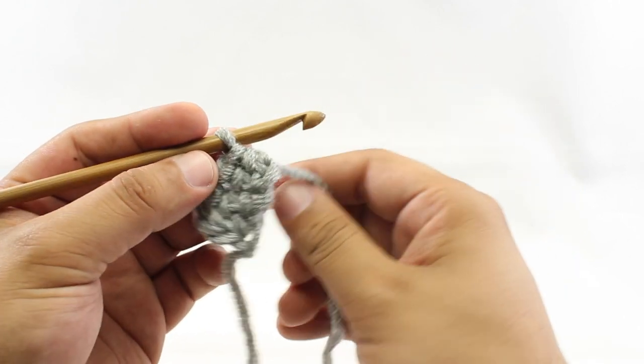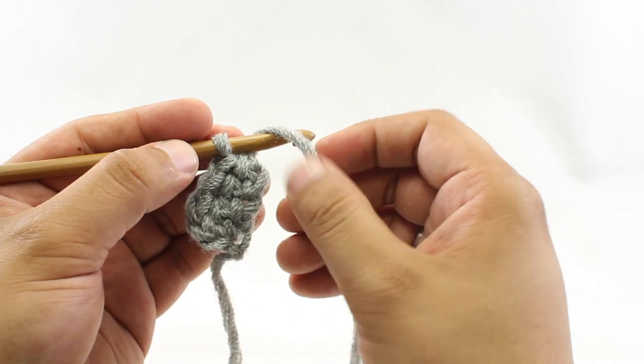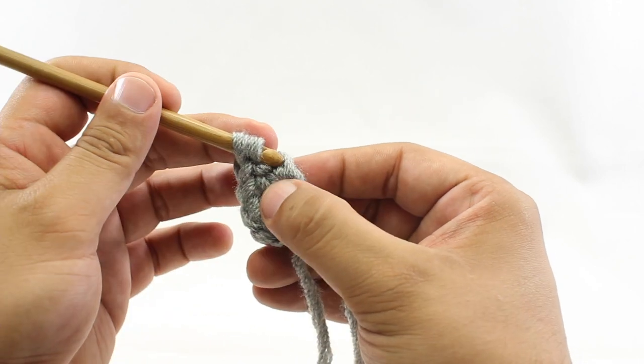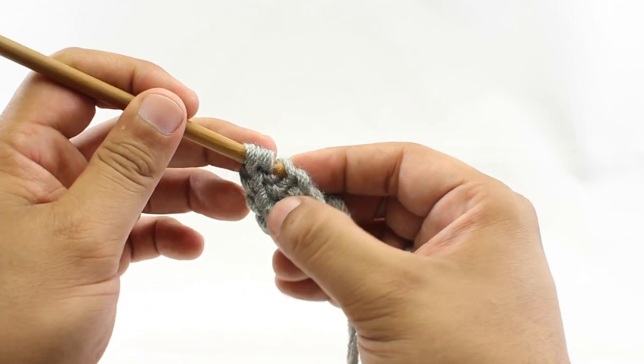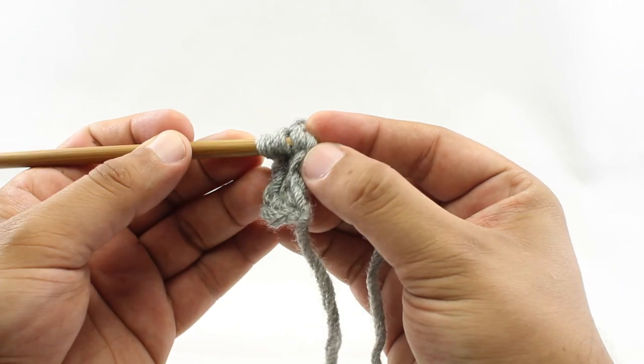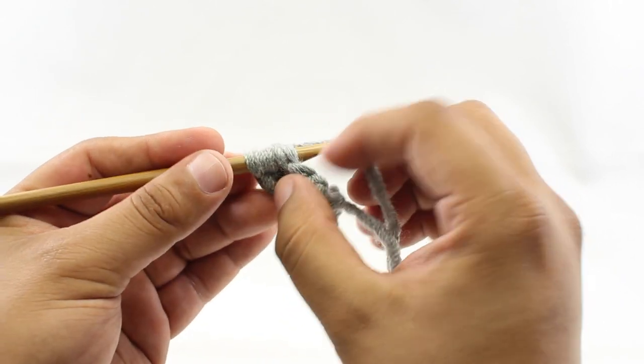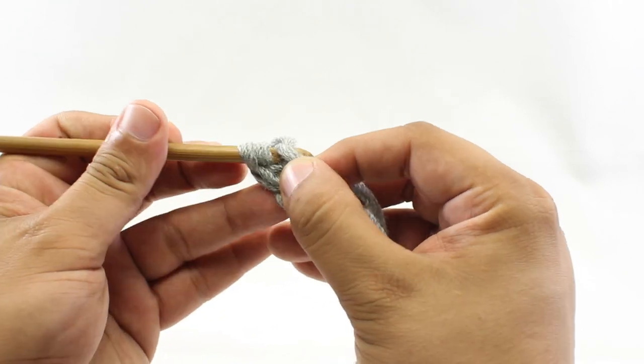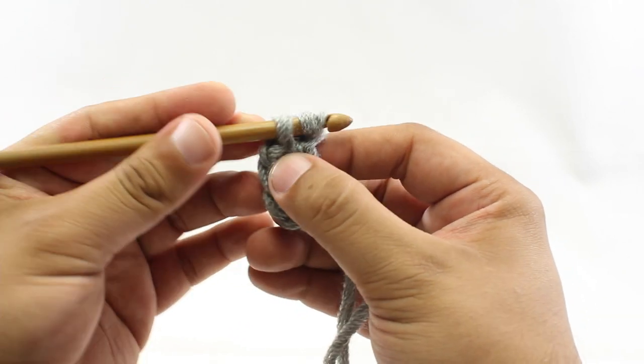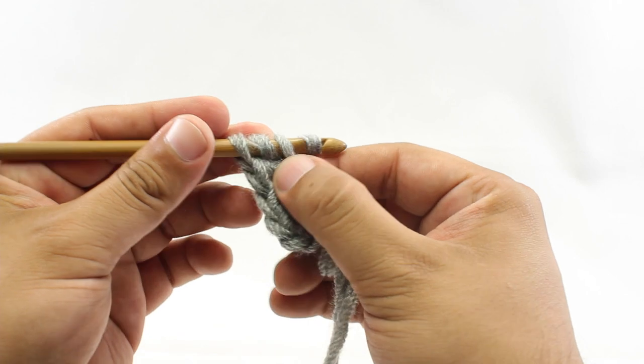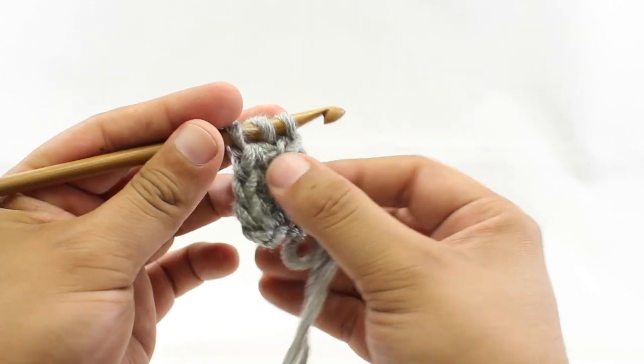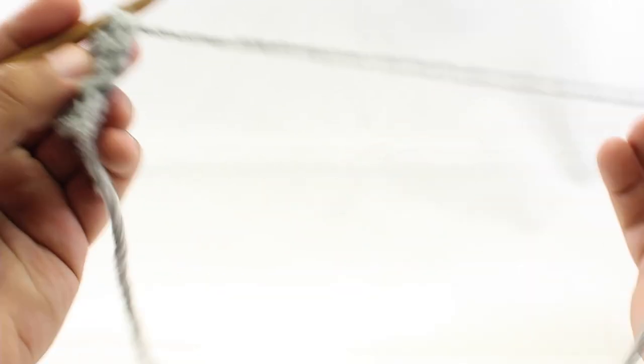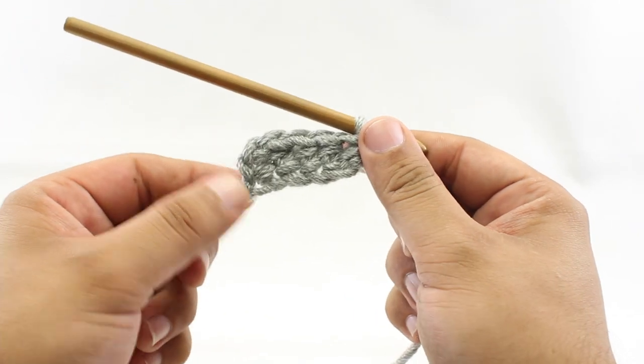So I'm going to do that for you just one more time because this can be a pretty tricky technique. We're going to yarn over. We're going to come right into that V, that middle of that V. Remember to pick up these two bands or two bars of the loop here. Yarn over and draw through. Yarn over and draw through the first loop. And yarn over and draw through all three loops. So there we go. That's how we do the foundation half double crochet.